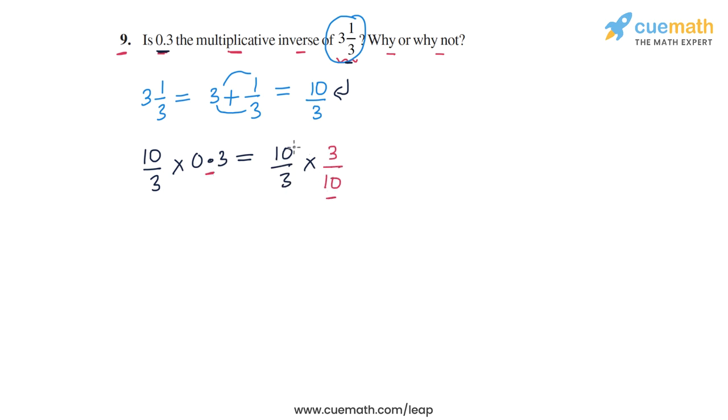So we get 10 by 3 into 3 by 10. The 10 by 10 cancels out and 3 by 3 cancels out and we get 1. So the product is 1.